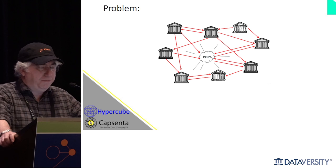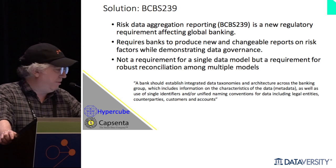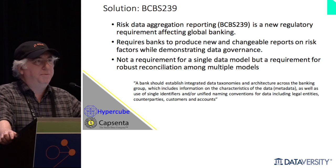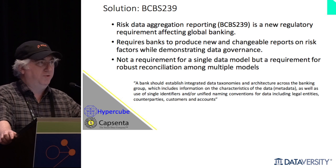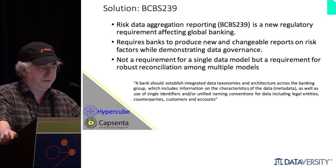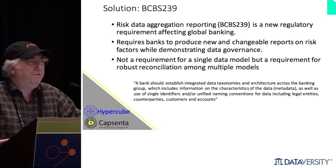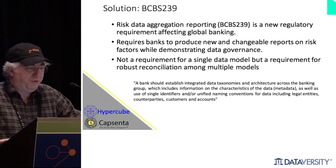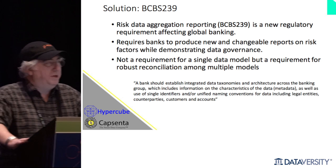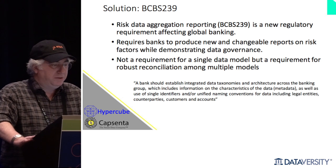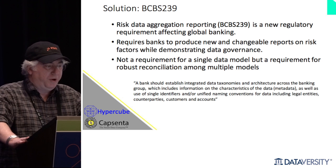The risk data aggregation standard — BCBS 239 for those of us geeks who remember numbers — is the risk data aggregation reporting regime introduced by the Basel Committee for Banking Supervision.